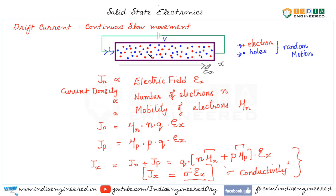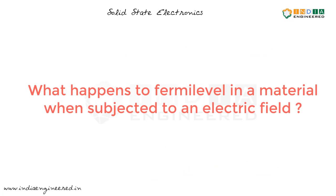Now it's time to consider the direction of movement of charge carriers. We discussed this in an earlier video, but we will quickly recap in which direction electrons and holes drift in the electric field and how we can add these components to calculate the total drift current density.